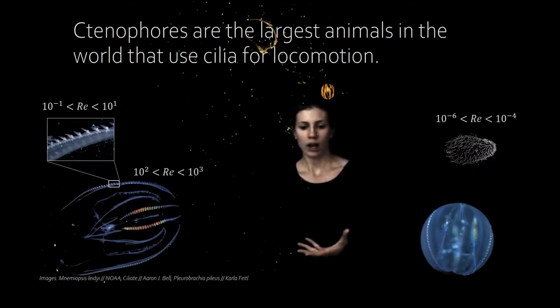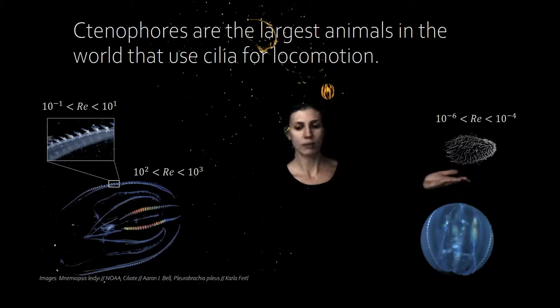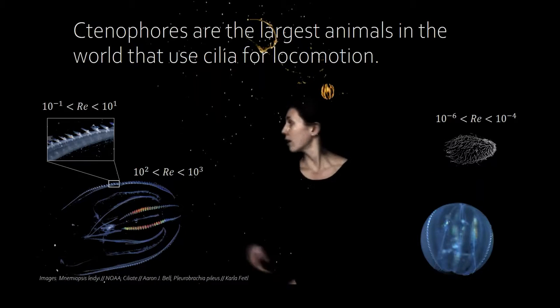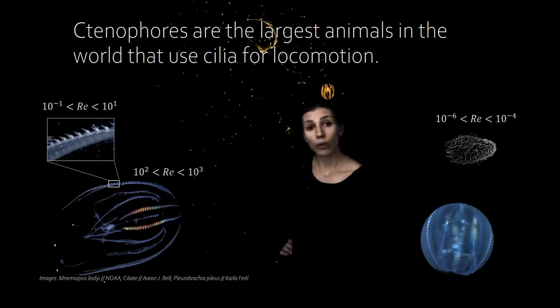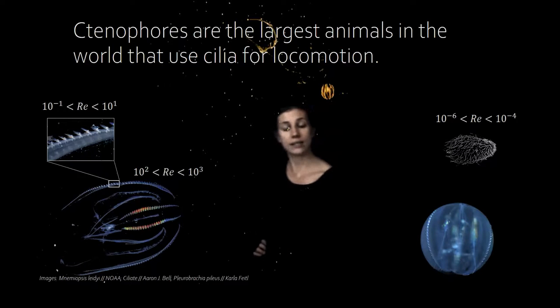So typical cilia are on the order of tens of microns in length, and they operate at very low Reynolds numbers. But ctenophore cilia are on the order of about a millimeter in length, and they move at intermediate Reynolds numbers. And in this situation, both fluid inertia and fluid viscosity are important.